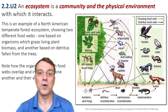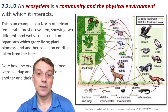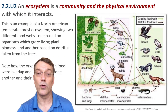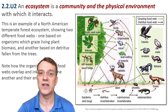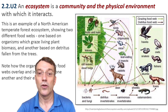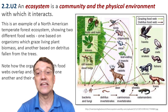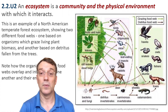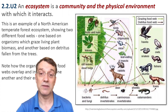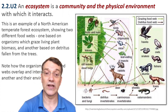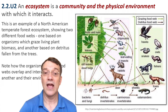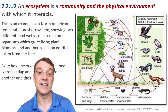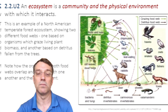Ecosystems are remarkably complex. This diagram shows a temperate forest food web with multiple interconnected feeding relationships. Notice how organisms participate in different food webs simultaneously — some feeding on living plant material in a grazing food web, and others consuming detritus in a decomposition food web.